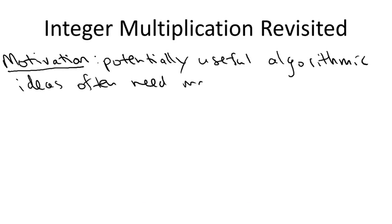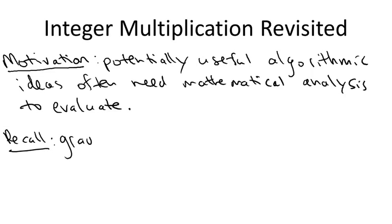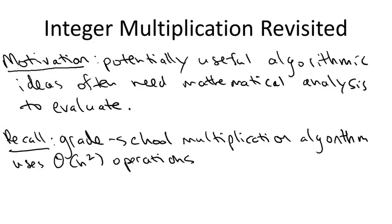As a motivating example, consider the computational problem of multiplying two n-digit numbers. Recall from our first set of lectures that we all learned the iterative grade school multiplication algorithm, and that requires a number of basic operations, additions and multiplications between single digits, which grows quadratically with the number of digits n.